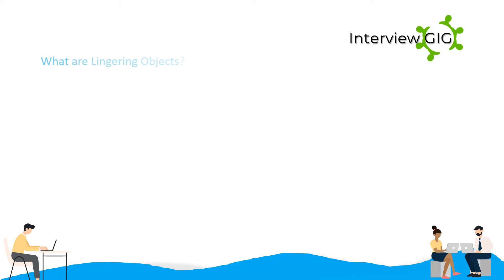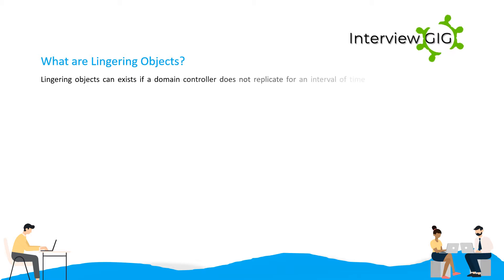What are lingering objects? Lingering objects can exist if a domain controller does not replicate for an interval of time that is longer than the Tombstone lifetime.